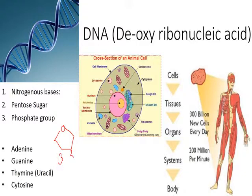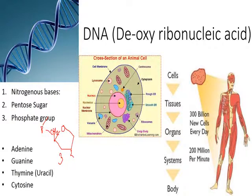As you can see, this is the pentose sugar structure. This is the second carbon, this is the third carbon, this is the fourth carbon, and this is the CH2 group at the fifth carbon. The phosphate group is attached here. The third carbon attachment connects to the adjacent pentose sugar, forming the backbone of DNA.